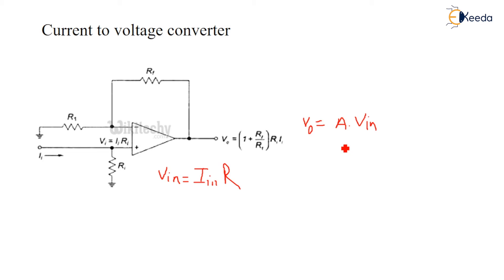So after simplification, I'll assume this R and R1 are equal. So this R and R1 will get cancelled and you'll get RF into IIN.